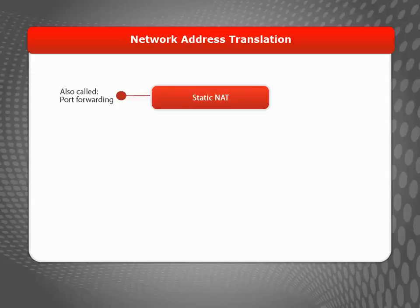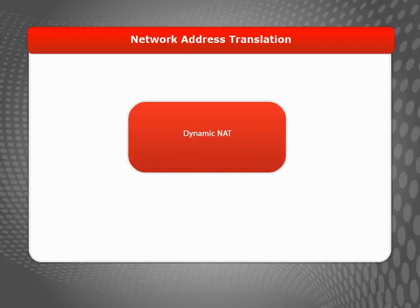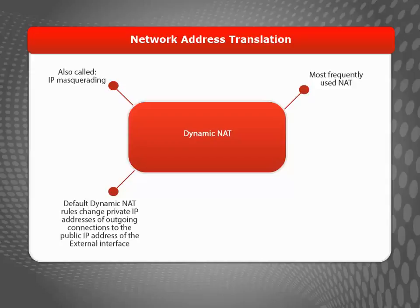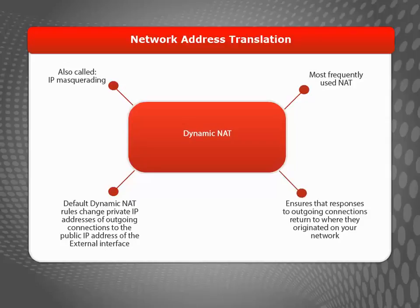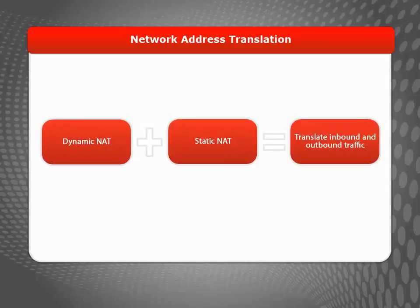With static NAT, which is sometimes called port forwarding, you can bind an external address for each public IP address to the private IP address of the server hosting it, located on your trusted or optional networks. Static NAT is useful for inbound connections, giving the public access to public servers protected by your firewall. Dynamic NAT, also known as IP masquerading, is the most frequently used type of NAT. By default, the firewall's dynamic NAT rules change the private source IP address of any outgoing connection to the public IP address of the external interface, so you might not even realize dynamic NAT is occurring. Dynamic NAT ensures that responses to your users' outgoing connections return to where they originated, and is perfect for outbound connections initiated by client computers protected by your firewall. However, it won't help when you want to make servers available for inbound connections from internet users. The combination of dynamic NAT and static NAT is powerful and allows you to translate both inbound and outbound connections.